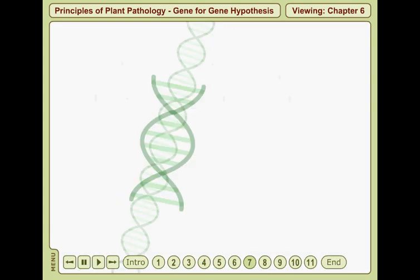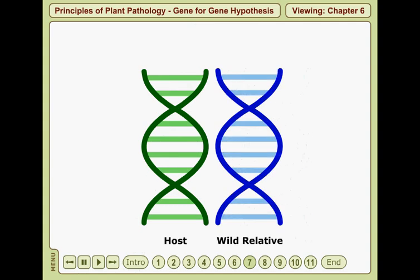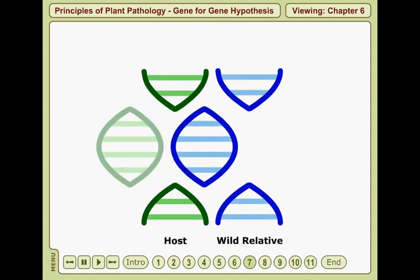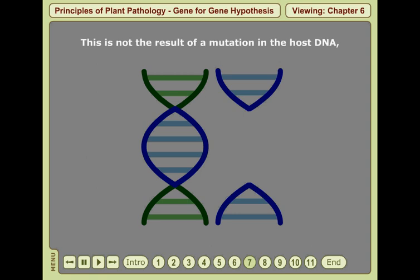A gene of interest is identified in a wild relative of the host and is introduced into the DNA of the susceptible host by conventional breeding or biotechnology. Note this is not the result of a mutation in the host DNA, but an actual substitution of one gene for another.